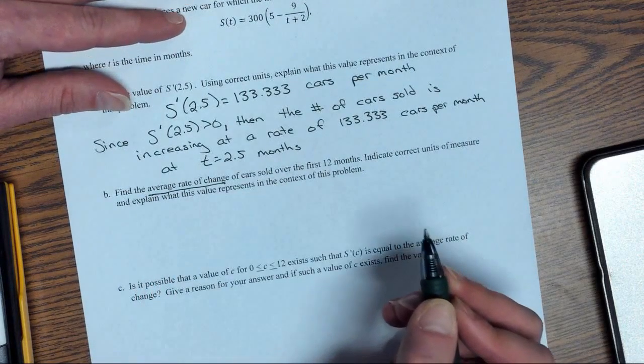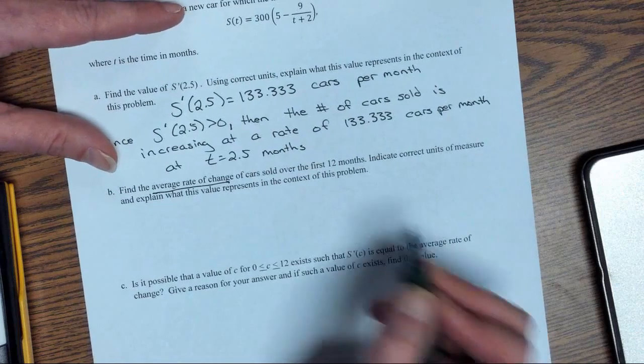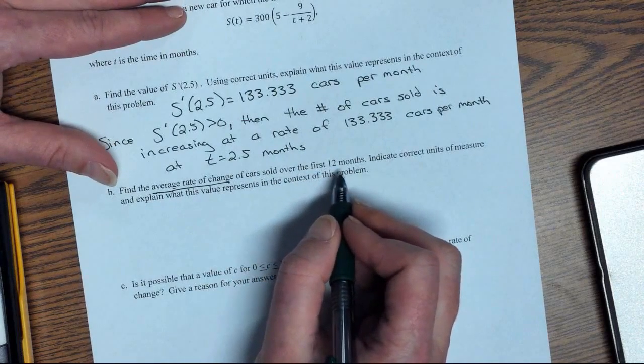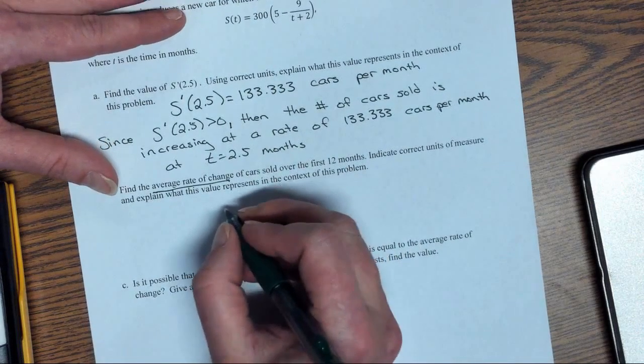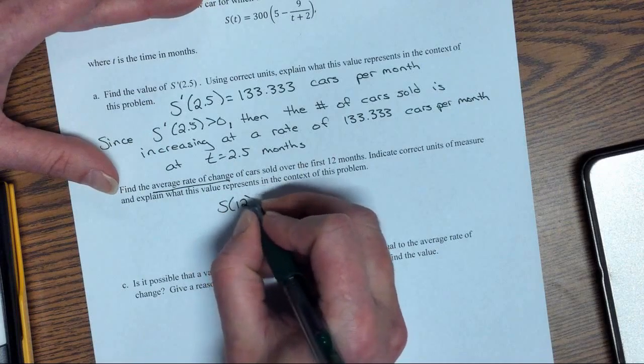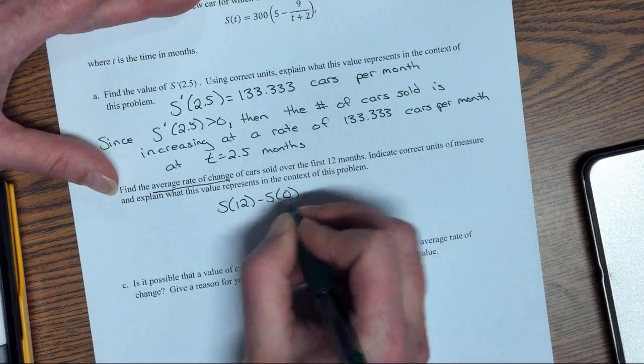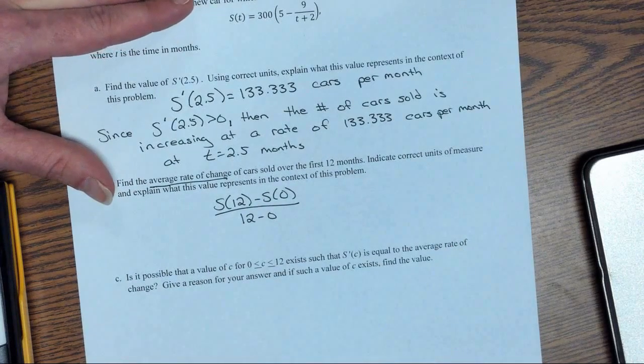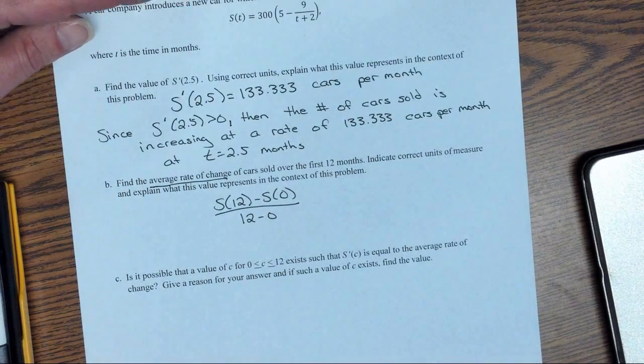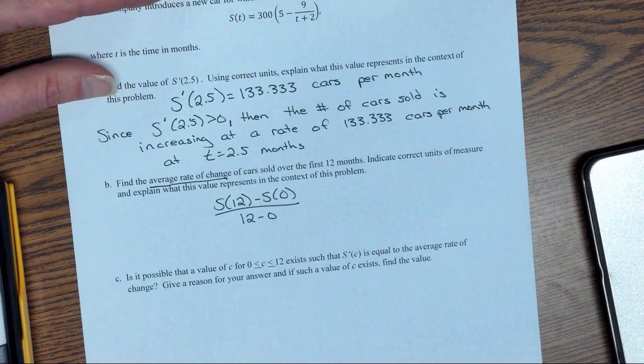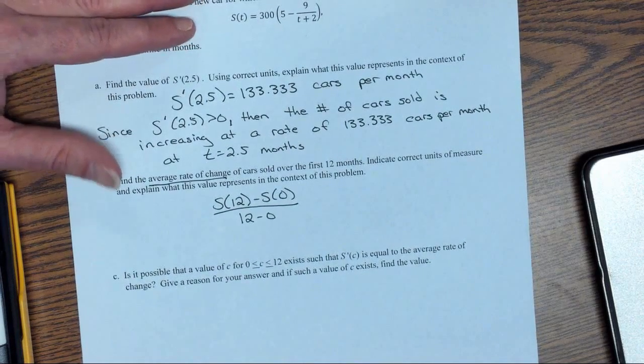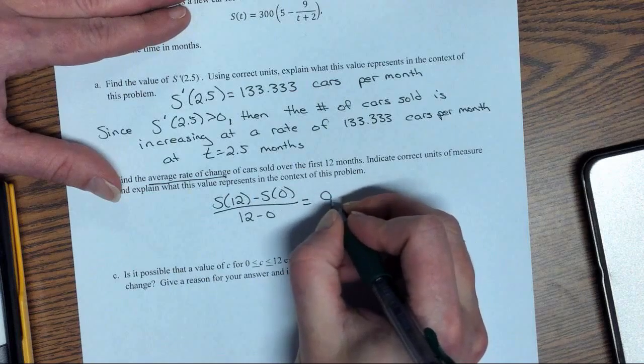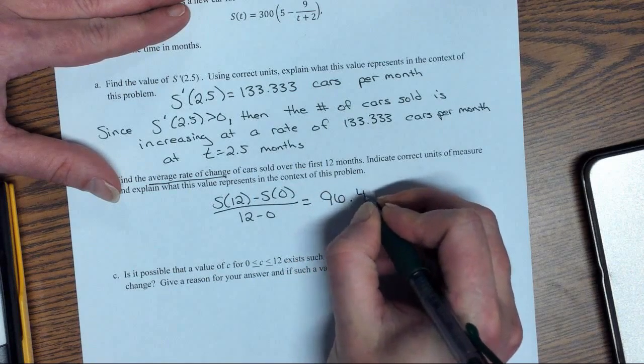The average rate of change, secant line, sold over the first 12 months. That means when you take s(12) minus s(0) over the difference in the time. So 12 minus 0.